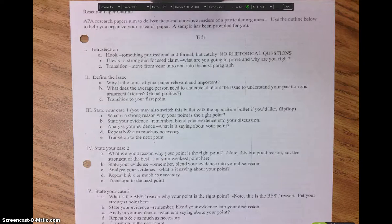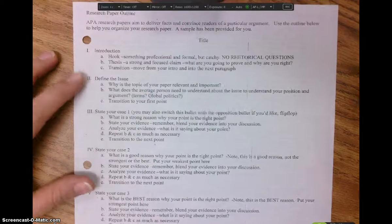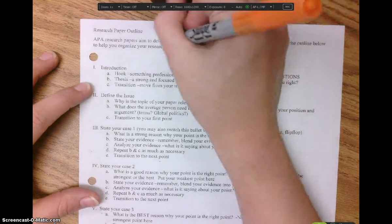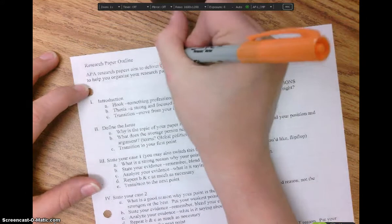Hello everybody, it's Mrs. Summerlin and I'm going to go over your research paper outline to help you get started. Well first of all, you need to know that an APA research paper is all about the facts and convincing, so it's all about informing and persuading.